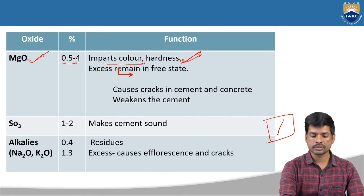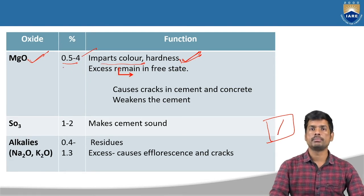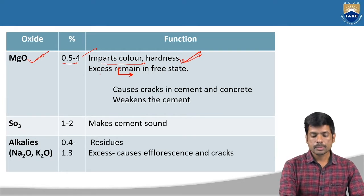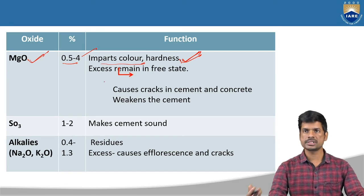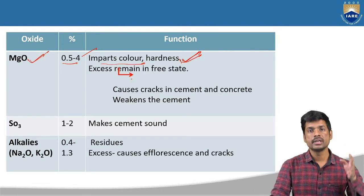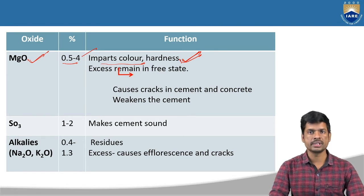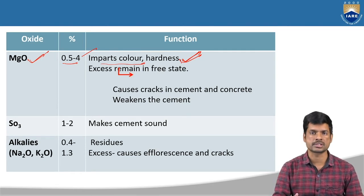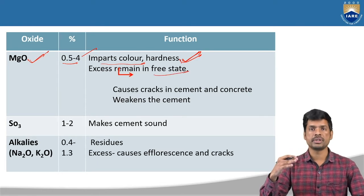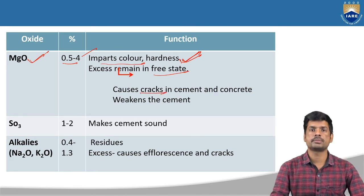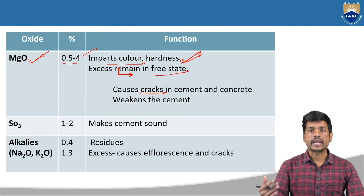If you add excess amount of magnesium oxide, or less amount of magnesium oxide, it is going to affect the hardness — it may reduce or it may increase. Excess amount of magnesium oxide is going to be in a free state. That means after adding water, it is not going to react with any other chemicals or water. This free magnesium oxide is going to crack the cement — it is going to affect the cement with cracks.